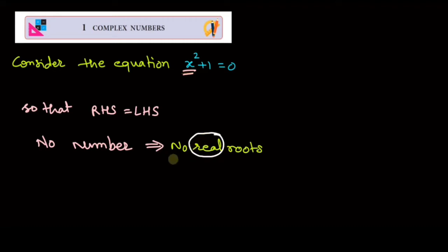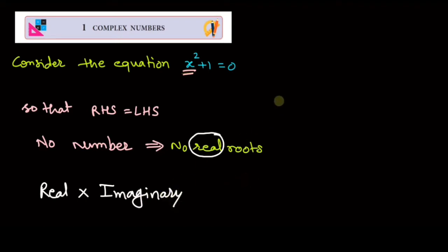Since there is no real number, and the opposite of real is imaginary — the thing which is not real in the world is imaginary — we are going to see imaginary numbers. To denote them, we use the Greek letter iota, written as i, which is equal to √(-1).